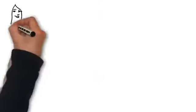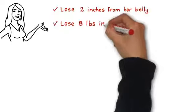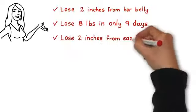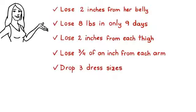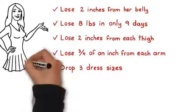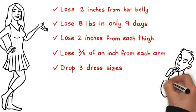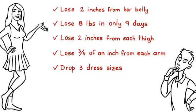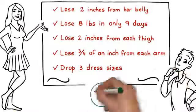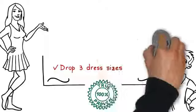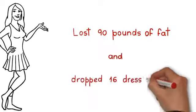This one specific tip that I'm about to share with you helped Lori lose two inches from her belly, lose eight pounds in only nine days, lose two inches from each thigh, lose three quarters of an inch from each arm, drop three dress sizes. At the age of 30, she now wears a smaller dress than she did in high school. Now, I know you're probably skeptical, and I don't blame you. It sounds like something so dramatic that it must be torn from one of those supermarket tabloids, right? But it isn't.